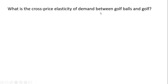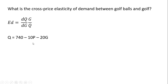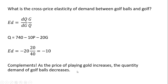Let's calculate the cross price elasticity of demand between golf balls and golf. Here's our formula — we're going to take the derivative of the demand equation with respect to G, the price of playing golf, and then multiply it by the ratio of the price of golf to the equilibrium quantity of golf balls. Here's our demand equation. Taking the derivative — technically it should be a partial derivative, but no big deal — we get back minus 20, the parameter in front of the G variable. The price of playing golf is $20, as stated at the beginning of the problem, and the equilibrium quantity is 40. So we have a cross price elasticity of demand of minus 10. That indicates we're dealing with complements — as the price of playing golf increases, the quantity demanded of golf balls decreases.